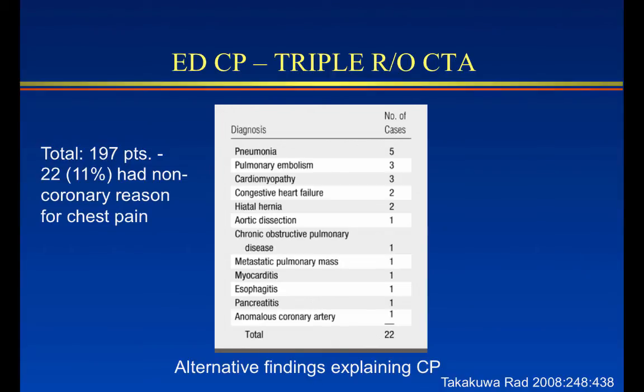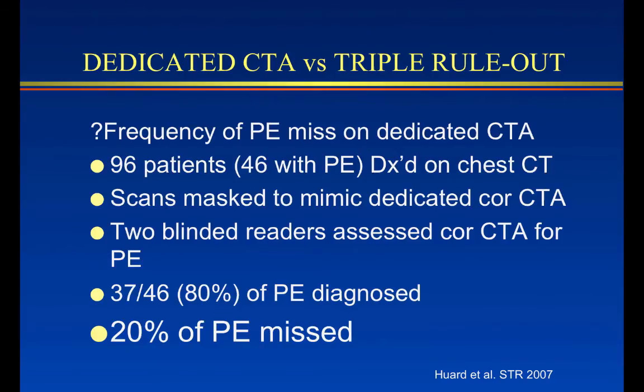A study from Jefferson looking at almost 200 patients showed that the name 'triple rule out' underestimates the number of causes that might be responsible for chest pain — there are on the order of about 15 different causes. Pulmonary embolism is high on the list, but aortic dissection is not so high. Hence, triple rule out is perhaps not the ideal term — it's more of a gated, comprehensive, contrast-enhanced study of the thorax. Over 10% of patients had a non-coronary reason for chest pain identified by the triple rule out, which is a reasonable number.